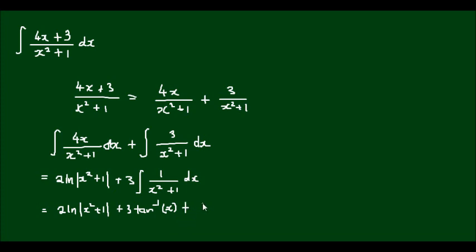And then we add a constant of integration, c, at the end. And I like to write this inverse tan a bit more neatly. So I'll rewrite the whole thing. So we're getting 2 times the natural log of the absolute value of x squared plus 1 plus 3 arc tan x plus c.